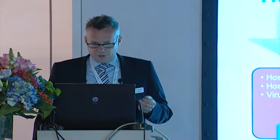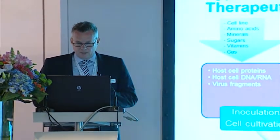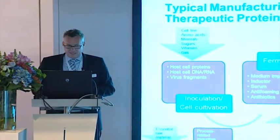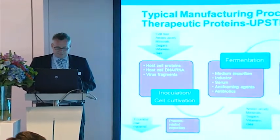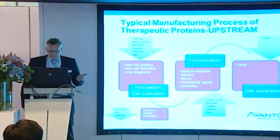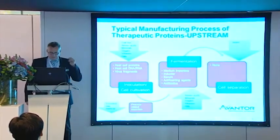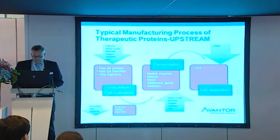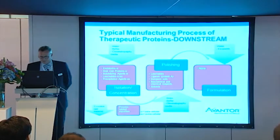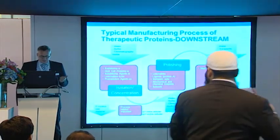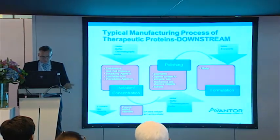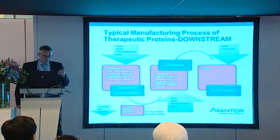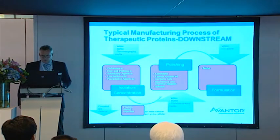During a typical manufacturing process, not only the target protein is produced, but also many impurities — including process-related impurities and product-related impurities. These product-related impurities have to be removed thoroughly in order to have a safe process. During the downstream processing, you also create a lot of impurities that have to be removed. Chromatography is most of the time the most effective way to remove these impurities.